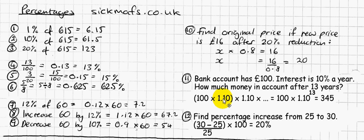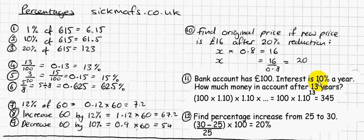If we're talking about a car decreasing in value, we'd use the same trick. If decreasing by 10%, we'd write 0.9, not 1.10. This trick only works if we're decreasing by a percentage of the previous year's value. If we're decreasing by 10% flat every year of the original amount — say a car worth £100 decreasing by £10 every year — that's different from compound percentage, which means a percentage applied to the previous year's value.